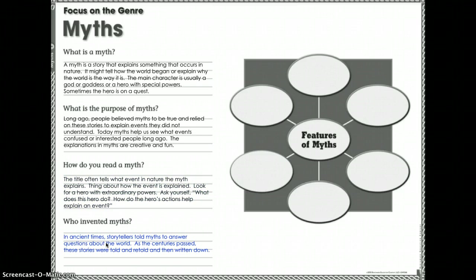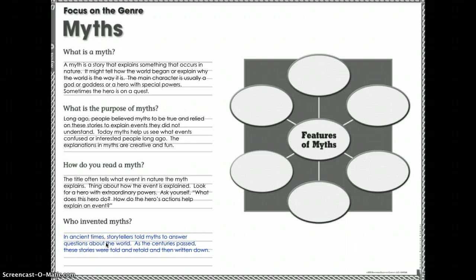In ancient times, storytellers told myths to answer questions about the world. As centuries passed, these stories were told and retold and eventually written down — like bedtime stories that were also science lessons explaining the world. As we became more sophisticated and developed scientific understanding, we no longer needed myths to explain things like the sun moving across the sky.